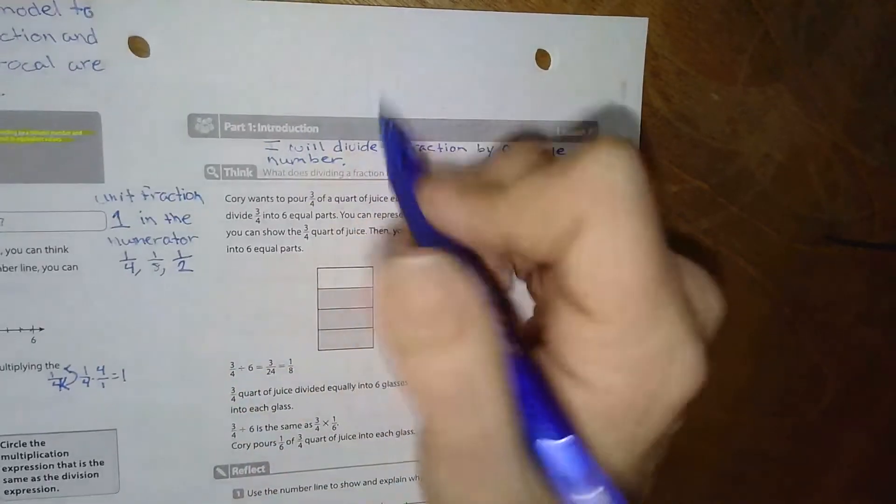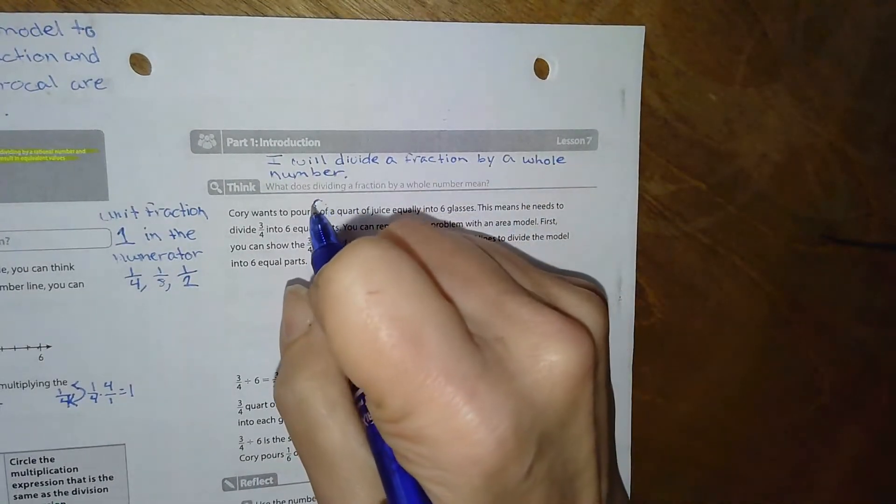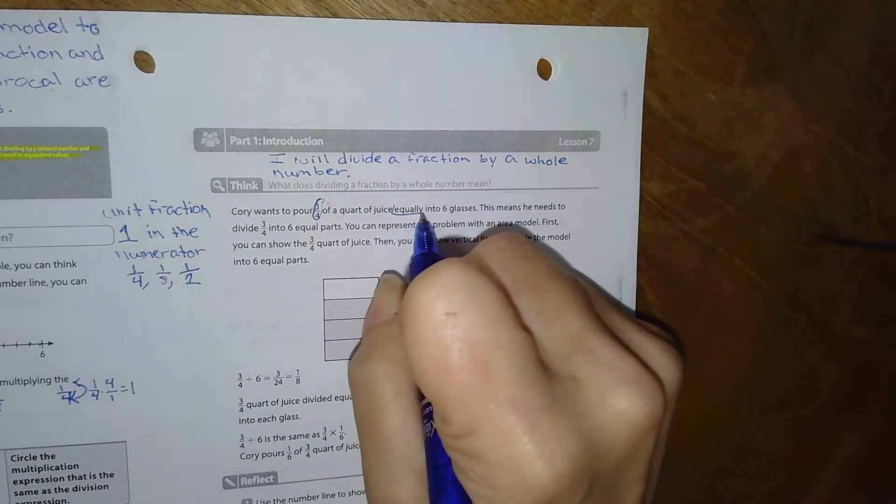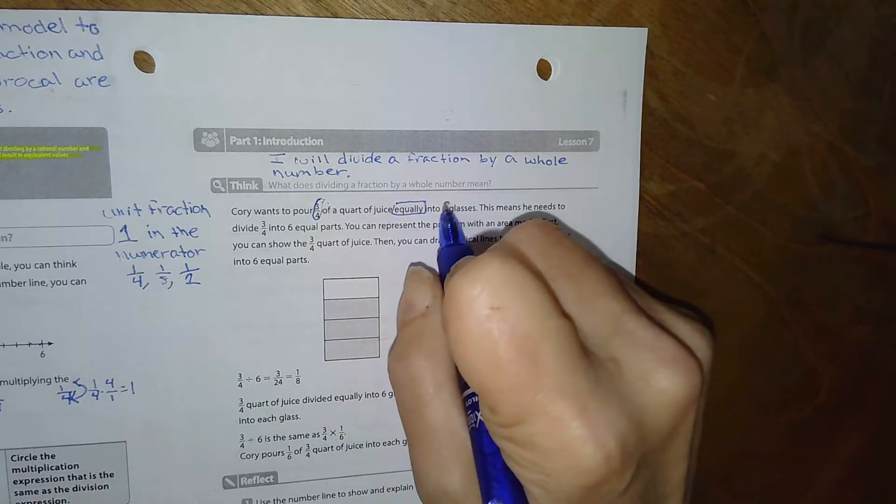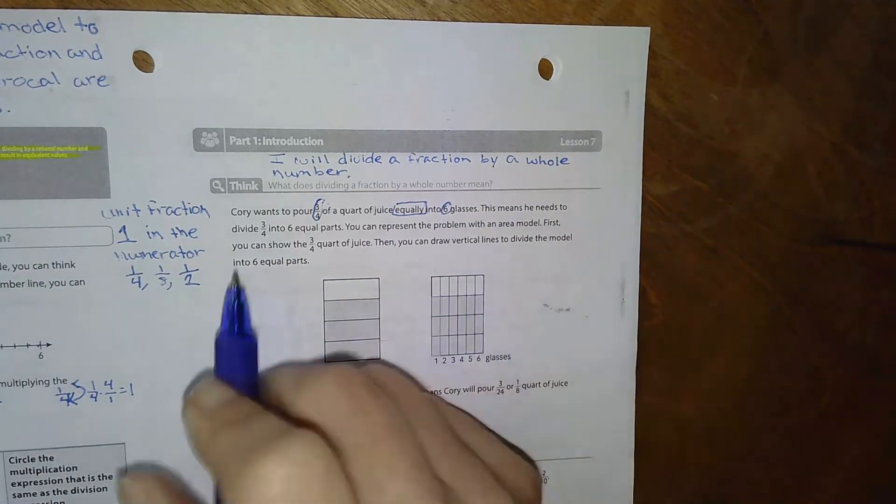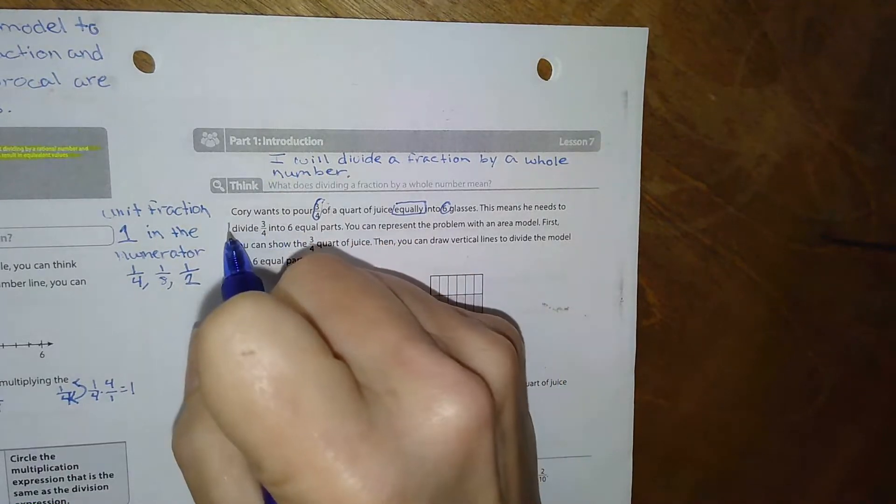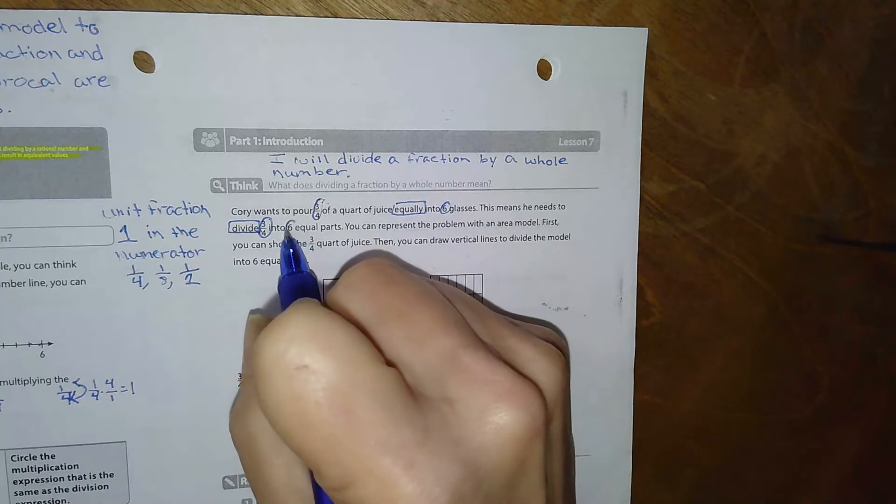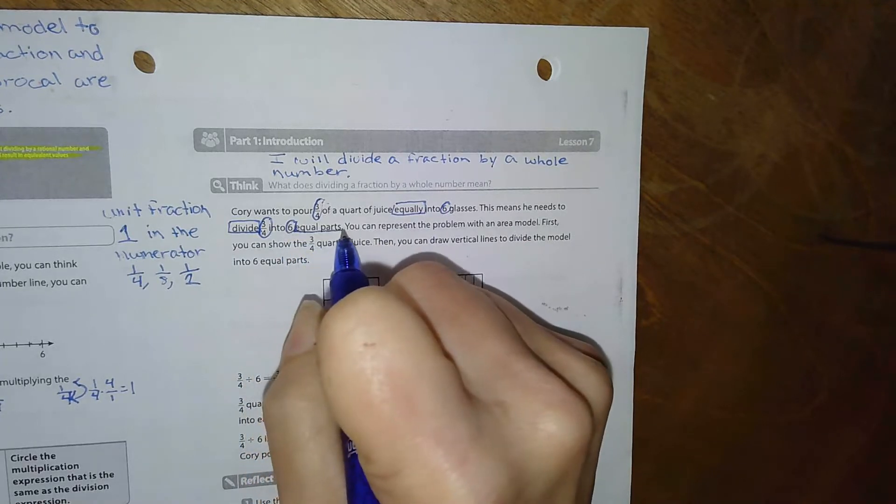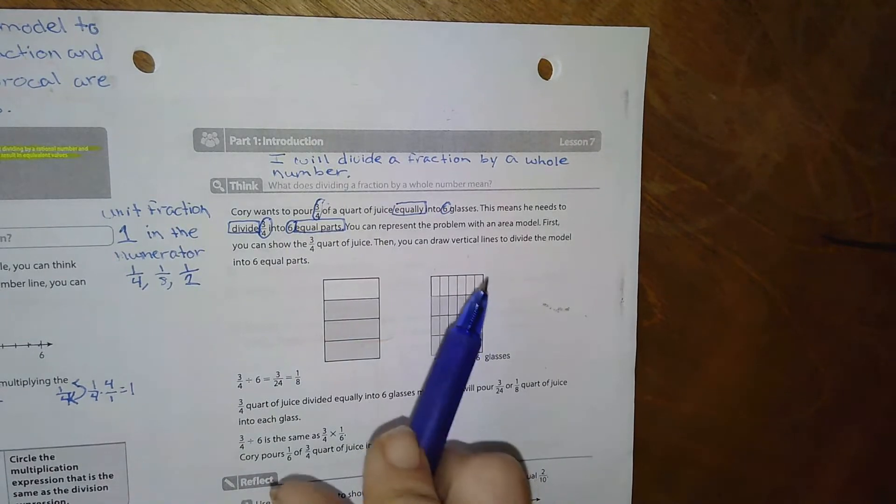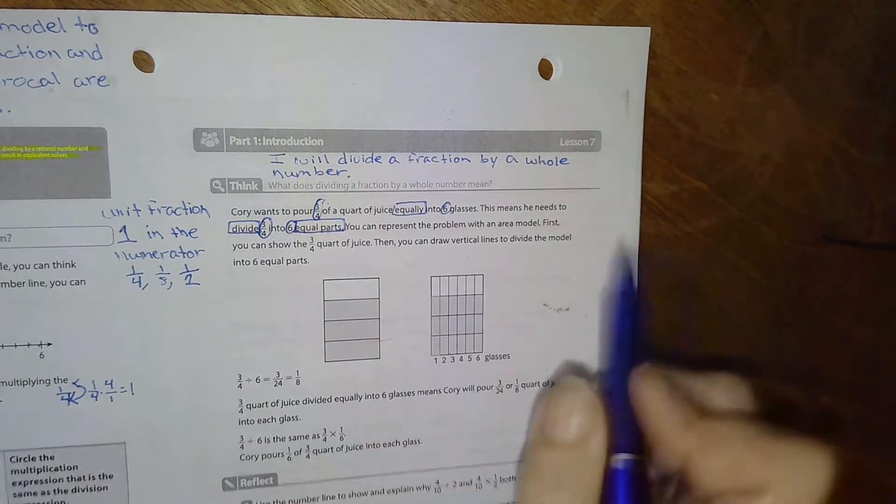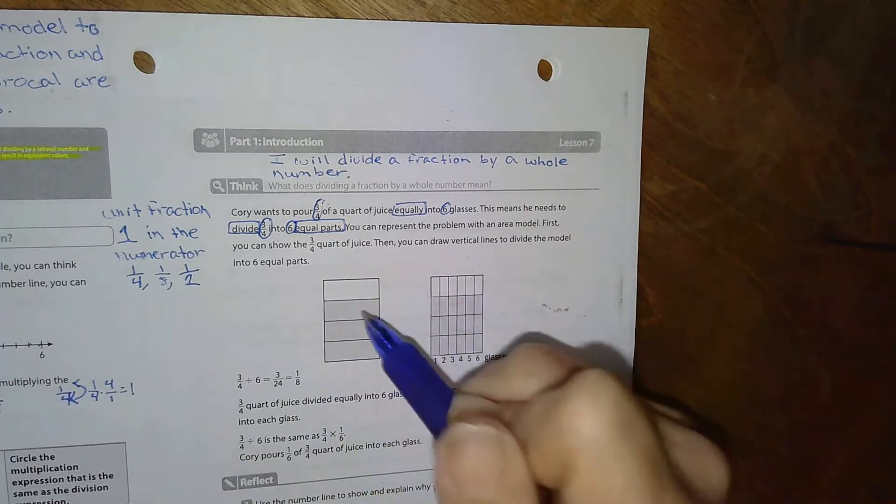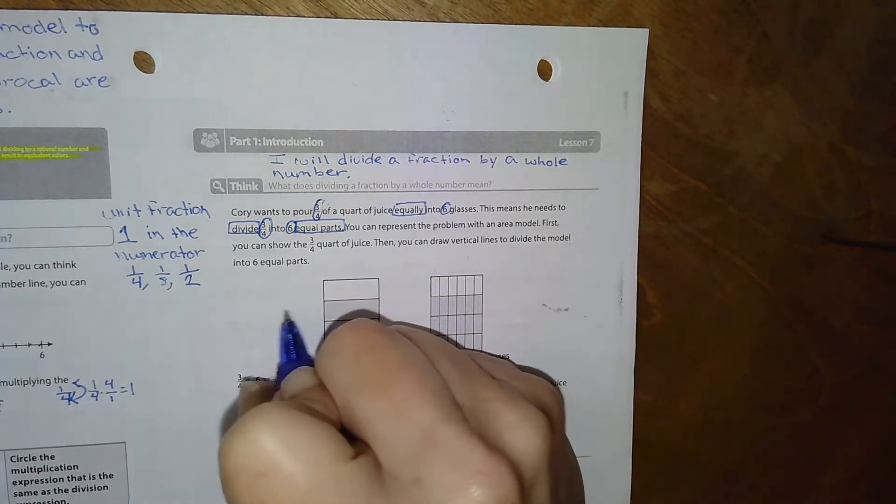Cory wants to pour three-fourths of a quart of juice equally into six glasses. This means he needs to divide three-fourths into six equal parts. You can represent the problem with an area model. First, you can show the three-fourths quart of juice. So three-fourths quart of juice is over here.